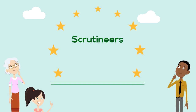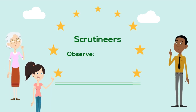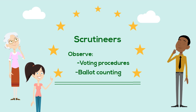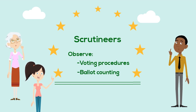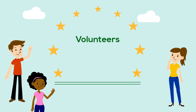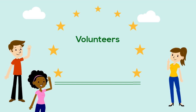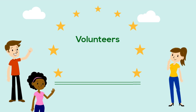Candidates may choose to appoint scrutineers to observe voting procedures and ballot counting. Check with the local chief election officer for more details. Candidates may also enlist volunteers to help with their campaign. There are limitations to who or what is considered volunteering — for example, a volunteer that works on a candidate's campaign must not receive any payment or remuneration for their services.